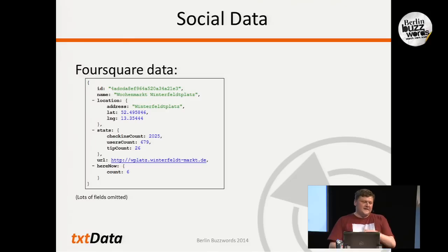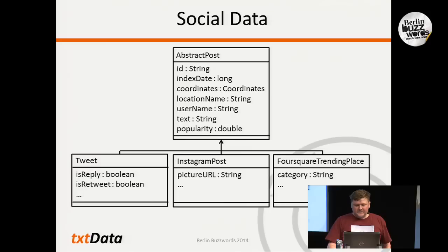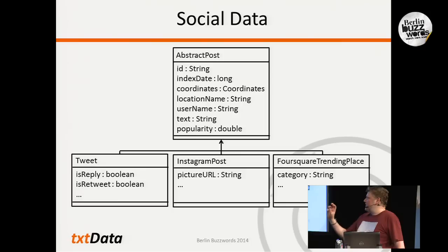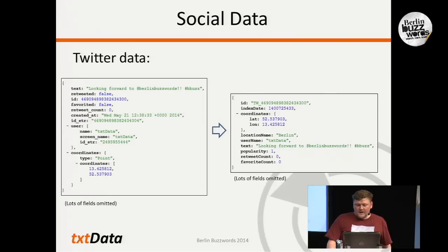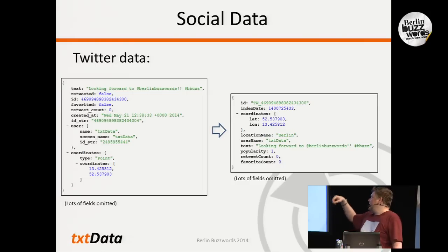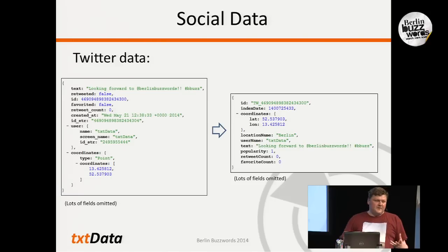We could just take data from the APIs and directly save it into Elasticsearch. However, the problem is that it's difficult to search because all the fields have different names. So what we need is a more structured approach — a little class hierarchy. We have an abstract post, which has text, coordinates, and index date all in the same fields. Then we have the three types of posts that have their own special properties. About 30% of the code is just transforming the Twitter JSON into that structure, so we end up with something uniform that we can easily search across all post types.